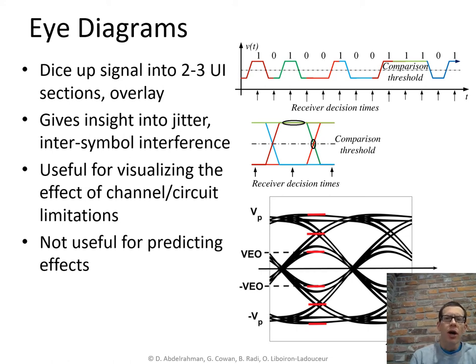Another tool that we'll use to inspect the signal integrity of a link is to draw an eye diagram of a signal at different points in the link. So to draw an eye diagram we dice up the signal into sections that are maybe two unit intervals long and then we're going to overlay them on top of each other. This process of overlaying the signal lets us in one small picture see many important aspects of signal integrity like we can see jitter we can see inter-symbol interference.